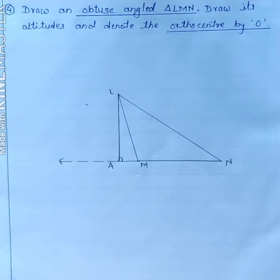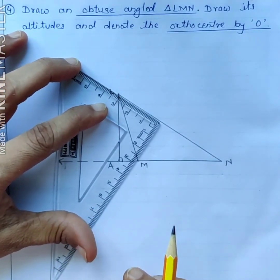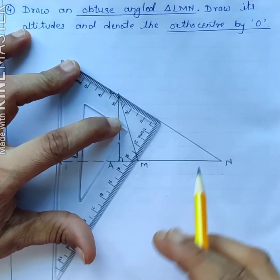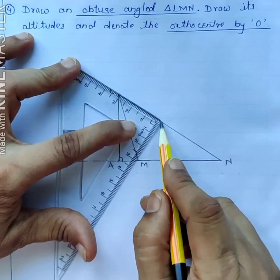Now another altitude from vertex M to the opposite side LN. Using this set square, this is perpendicular to the side LN.